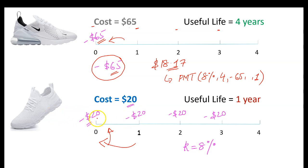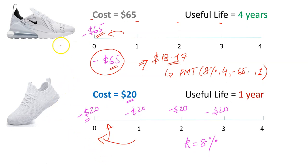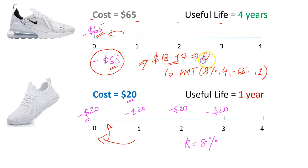So on an equivalent annual basis, the Nike shoe costs $18.17 per year compared to $20 per year for the generic shoe. Hence the term equivalent annual cost — on an equivalent basis, what is the annual cost? Nike is cheaper at $18.17 versus $20. The EAC method says that whenever you have two investments with unequal lives where you will be replacing them after their useful life, you must evaluate them based on their equivalent annual cost. The equivalent annual cost of the Nike shoe is $18.17; the generic shoe is $20. Because $18.17 is less than $20, Nike is the better investment.